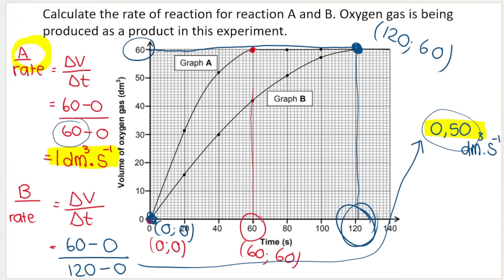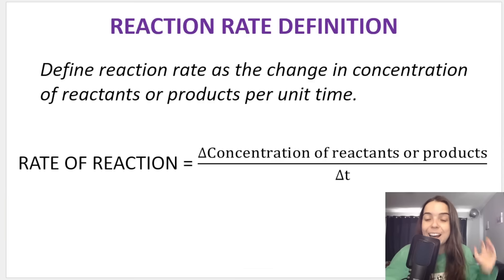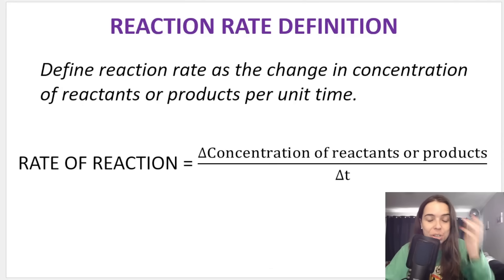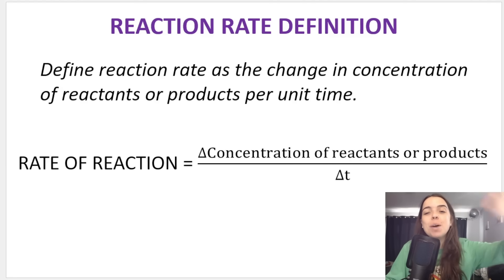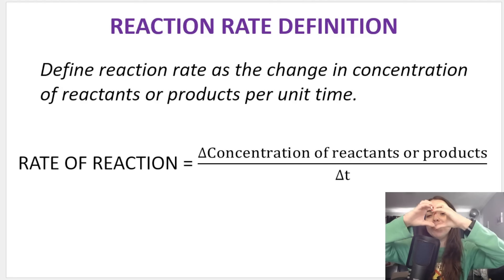Notice the curves on the graph: graph A has a much steeper gradient, confirming what we said in the graph video — the steeper the gradient, the higher the rate of reaction. I hope this video on calculating the rate of reaction has been helpful. You can apply it in all your application questions. Subscribe if you haven't yet — see you in another video!